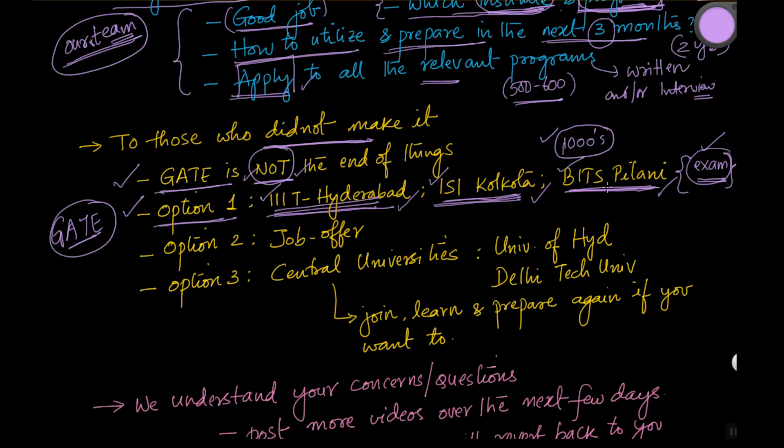So our strong recommendation is if you are prepared for gate, and the syllabus mostly is like the gate syllabus, so if you have not gotten a good rank, we strongly recommend that you apply to IIIT Hyderabad, Indian Statistical Institute Kolkata and BITS Pilani, where the master's programs are also very good. So please apply, please go to the websites of these three institutes. We'll try and provide some links below this video also, and please apply for these examinations and continue your preparation.